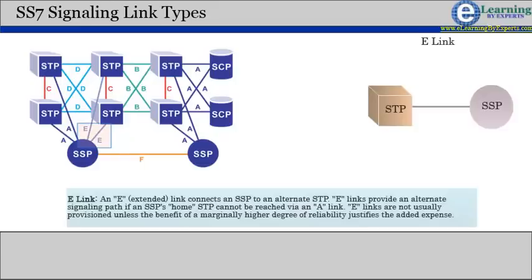E link, an E or extended link, connects an SSP to an alternate STP. E links provide an alternate signaling path if an SSP's home STP cannot be reached via an A link.